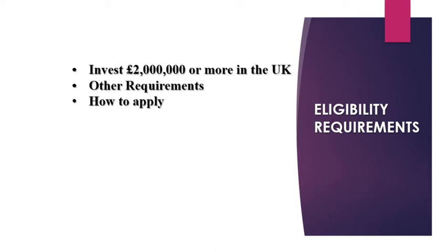Once you complete the application form, you need to pay the Home Office fee. If you apply from within the UK, the fee is £1,623 — the same whether you are extending or switching in this visa category. If you want your decision within five working days, you can pay an extra £500. In addition to the Home Office fee, you need to pay the Immigration Health Surcharge, which is currently £400 per year. I would suggest checking the current fees at the time you apply, as they are constantly changing.